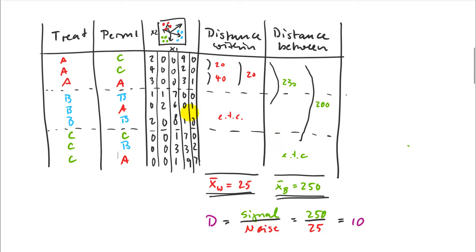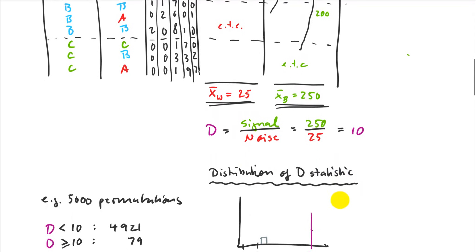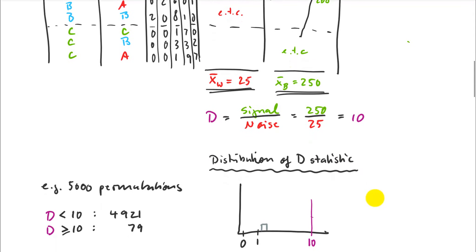I do the same procedure again. I calculate all the distances within, all the distances between, and I get a new signal to noise ratio for the case where I don't actually have any treatment effects. Maybe in this case it was a value that's a little lower than one. That's possible as well. So I build my distribution here as I go. Maybe sometimes I also get bigger values just by random chance.